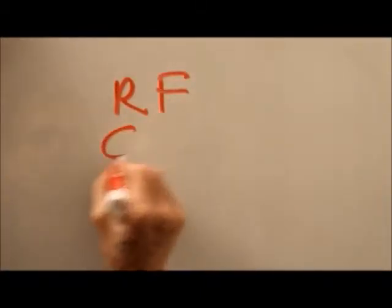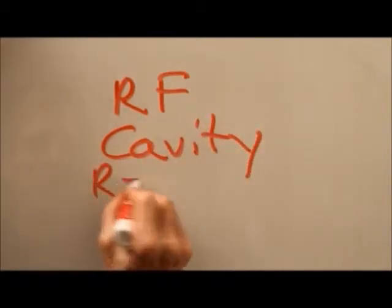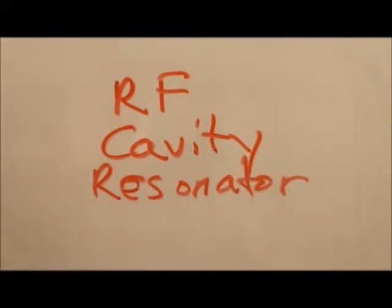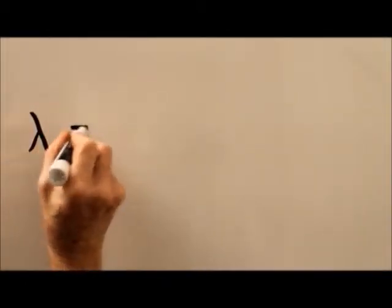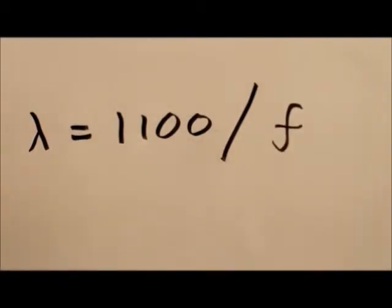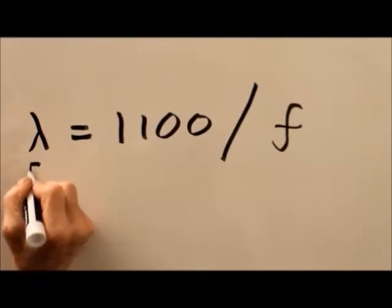Surely you have heard of cavity resonators for RF. They're quite commonly used at VHF and UHF where the wavelengths of radio frequency signals are pretty short, on the order of a meter or less. Radio frequency cavities look kind of like little barrels with little tuning devices in them. I thought: sound waves have a pretty short wavelength in air at the Earth's surface. In fact, the wavelength of a sound wave — we'll call it lambda — is approximately equal to 1100 divided by the frequency in Hertz, and that gives you the wavelength in feet.